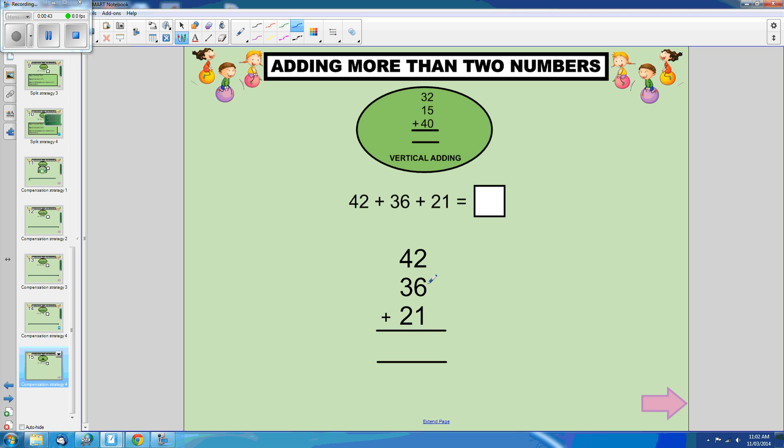2 plus 6 plus 1 is 9, 4 plus 3 plus 2 is 9. And so our answer is 99.